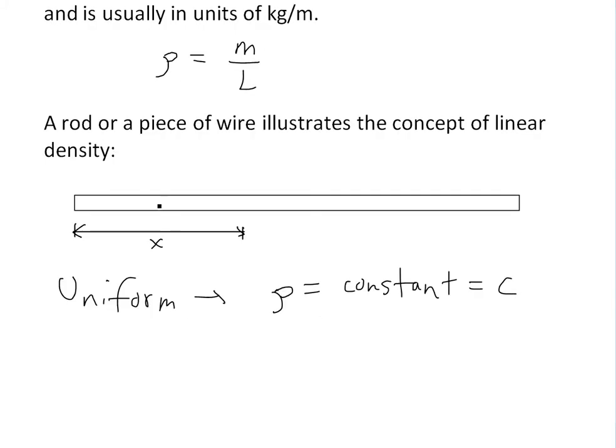The mass of this section of the rod would just be mass equals density times length. So basically rho times in this case x. So you'll just have a constant times it, c times x, and this is pretty straightforward. As long as you know the density, you can just quickly multiply by however long it is if it's uniform.